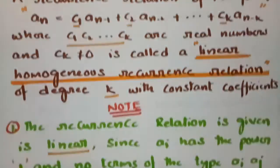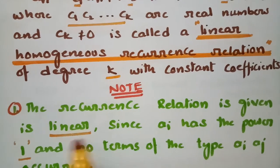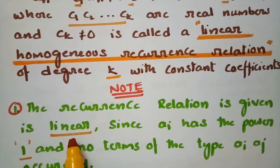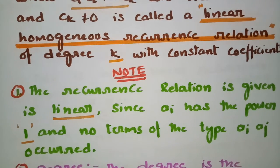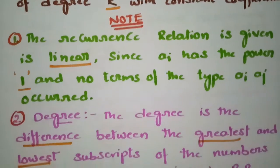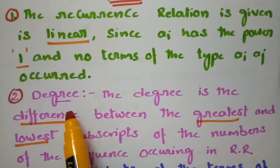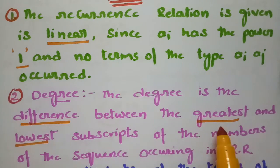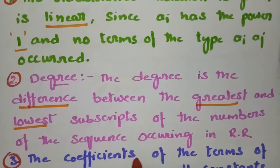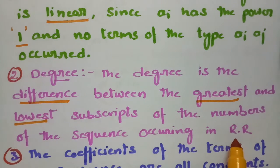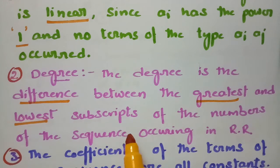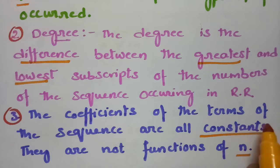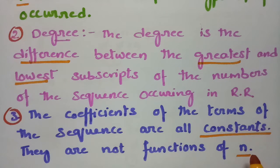There are three points to be noted. First, the recurrence relation is linear since each term has power 1 and no product terms of the type aᵢ·aⱼ occur. Second, the degree is the difference between the greatest and the lowest subscript of the sequence occurring in the recurrence relation. Third, the coefficients of all the terms of the sequence are all constants and they are not functions of n.